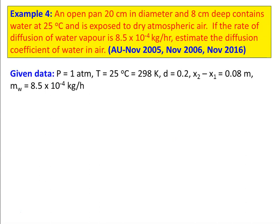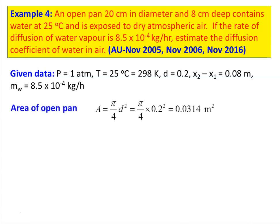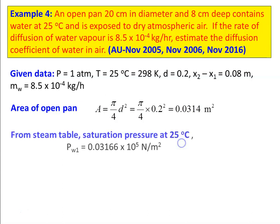The given data: pressure is 1 atmosphere, temperature is 25 degree Celsius, which is 298 Kelvin. Diameter is 0.2 meter. x2 minus x1 equal to 0.08 meter. Mass of water evaporated is 8.5 into 10 power minus 4 kilograms per hour. The area of the open pan is pi by 4 d square, which is pi by 4 into 0.2 square, equal to 0.0314 meter square.